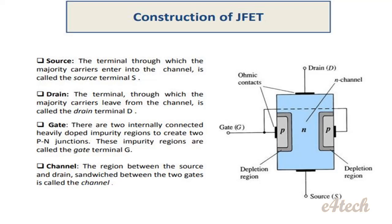These are J-FET's main parts. First, Source: the terminal through which the majority carriers enter into the channel is called the Source Terminal, denoted by the letter S. Next, Drain: the terminal through which majority carriers leave from the channel is called Drain, denoted by letter D.